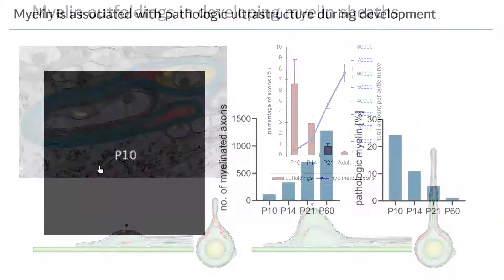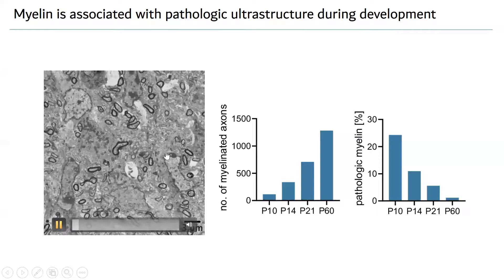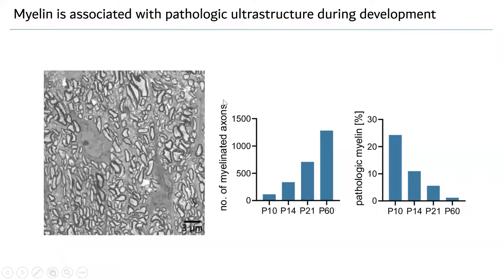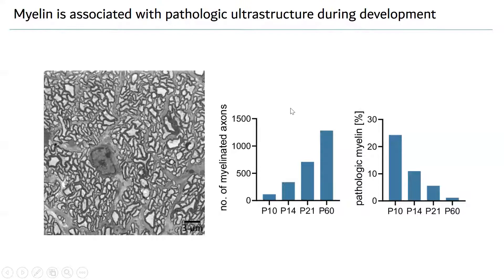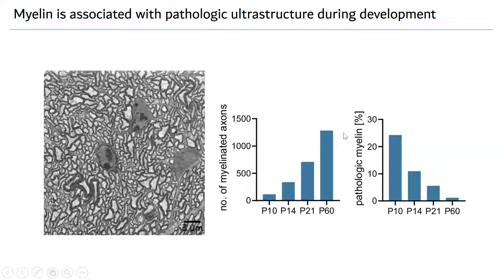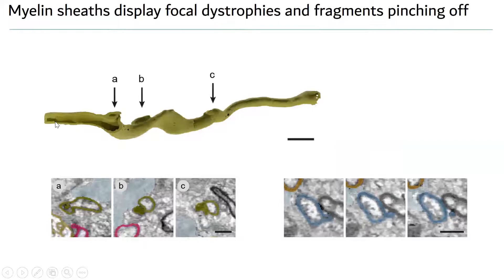Looking in more detail at myelin morphology, we discovered that during development at P10 and P14 you see pathological features — abnormalities that start to disappear as myelin matures. There is an inverse relationship of these ultra-structural abnormalities with the progression of myelination. In a 3D reconstruction of one myelin sheet you can see three different focal areas of myelin abnormalities.